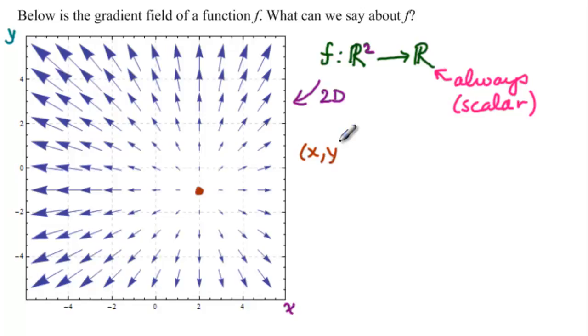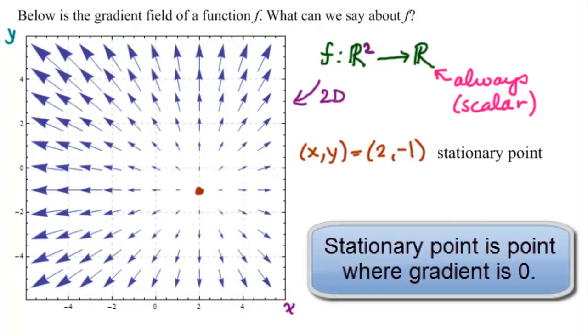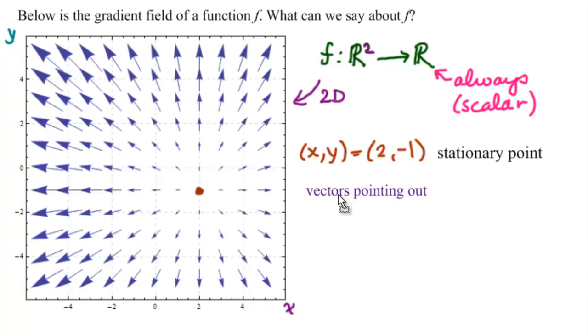So x, y is (2, -1), is in fact a stationary point, a point where the gradient is zero. Now, all of the vectors are pointing out from that point. So that means that we have a minimum there. We saw that in the one-dimensional case. So this is a point of minimum. f at this value should be the minimum value of all of f in this region here. What else do we know?